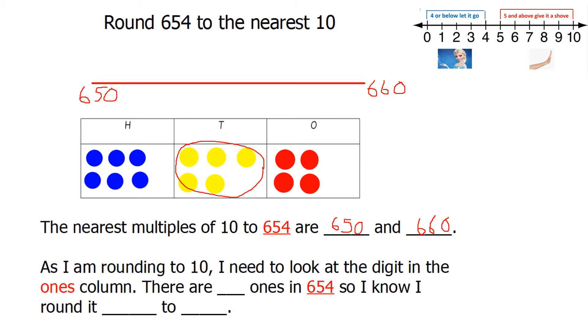654 is just under halfway, because 655 would be about halfway. As I'm rounding to 10, I need to look at the digit in the ones column. There are 4 ones in 654, so I know I need to round it down to 650. That means 650 is my answer.